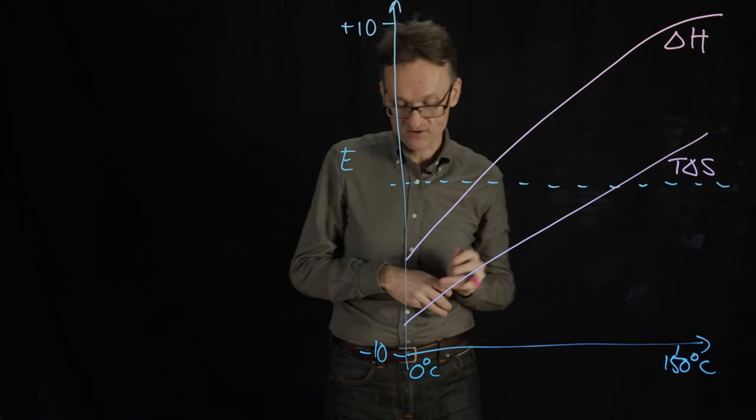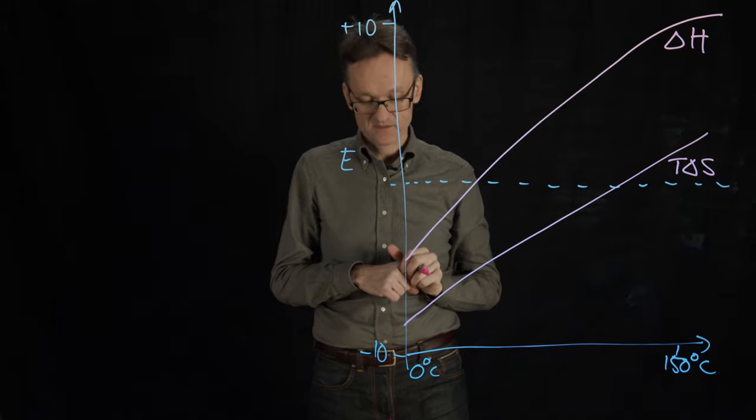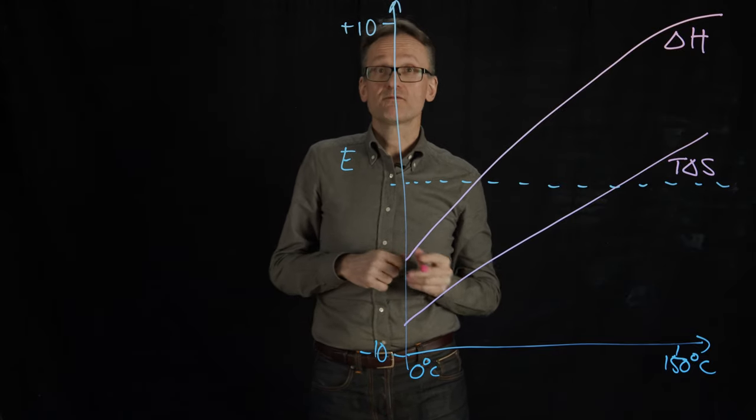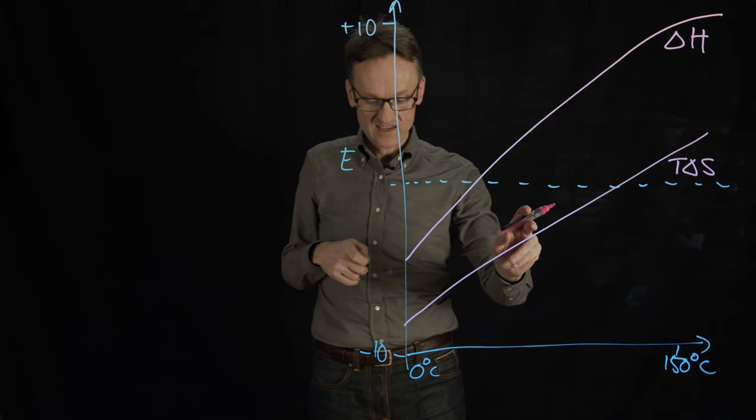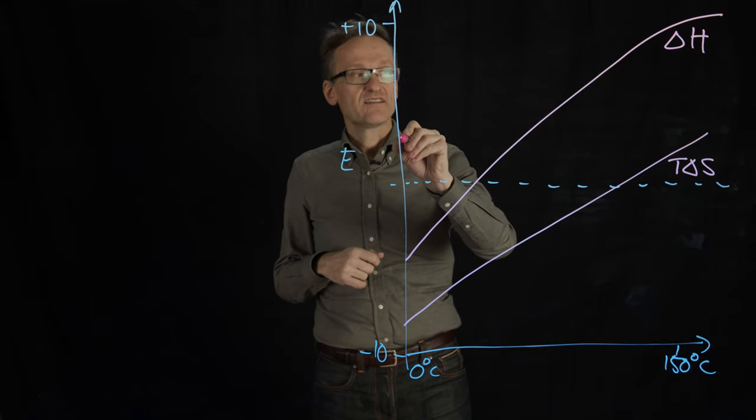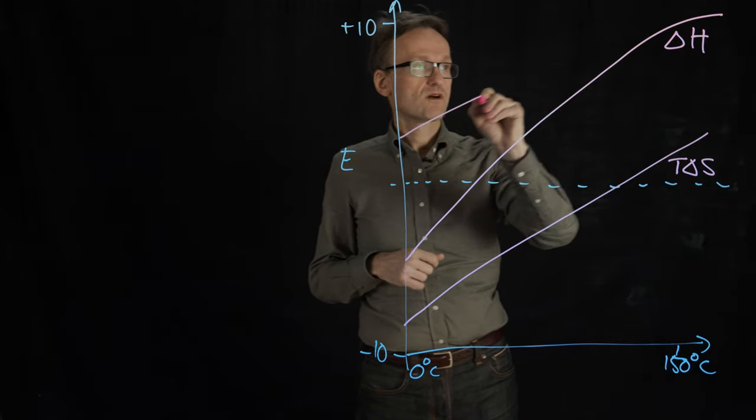So, oh sorry, local maximum. And finally if we take the difference between ∆H and T∆S we would get ∆G, right? And that might end up going something roughly like that.